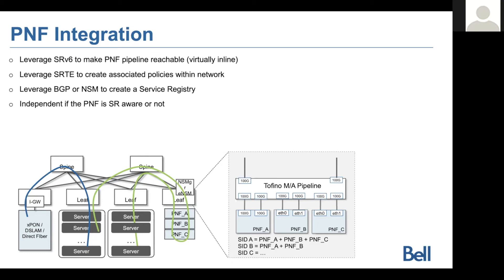Because of the proxy model and the capabilities of programmable pipelines like Tofino, we're able to make this available for PNFs, VNFs, or CNFs — whether they are SR-aware or not. Meaning I can use existing devices and still create a virtual chain in the network. Rather than doing recirculation and recreating a chain per device, I can create an entry in an SRV6 forwarding plane using a segment ID — either the standard 128-bit one or a compressed uCEDD one.